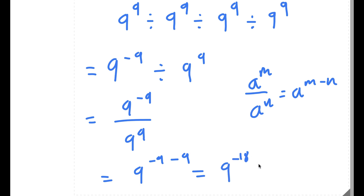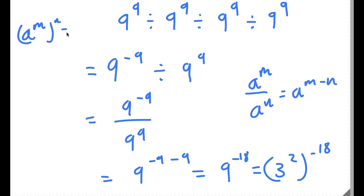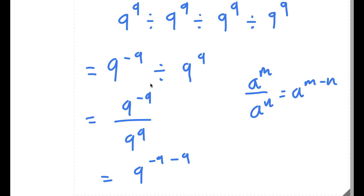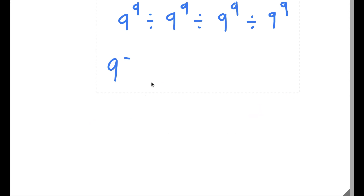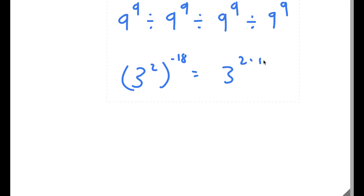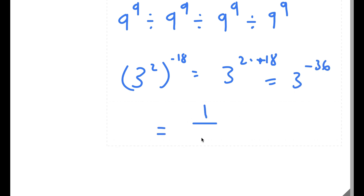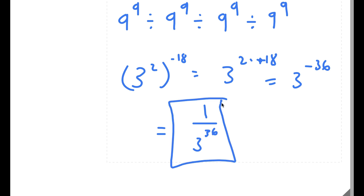So now I have 9 to the power of negative 18. Since 9 is the same as 3 squared, I can write this as 3 squared to the power of negative 18. Using the rule a to the power of m to the power of n equals a to the power of m times n, this equals 3 to the power of 2 times negative 18, which is 3 to the power of negative 36. That equals 1 over 3 to the power of positive 36, so this is my answer.